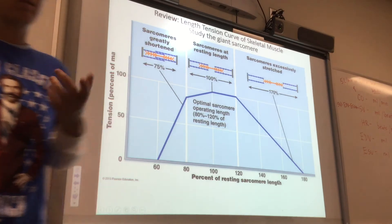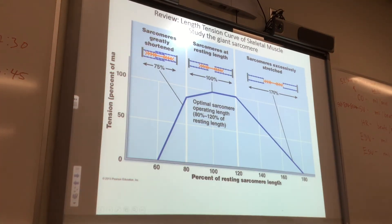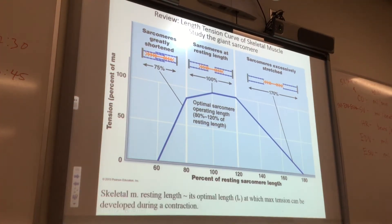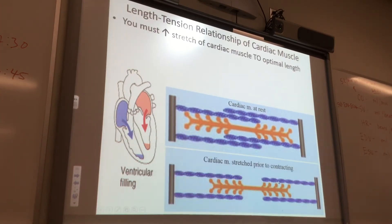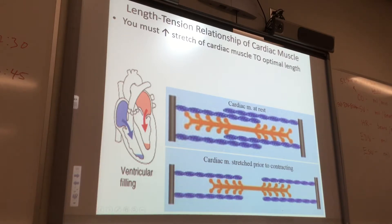When they contract, they can eject that blood like they're supposed to. So here's cardiac muscle at rest, and here's cardiac muscle stretched due to filling of the ventricles. Unlike skeletal muscle, which is already at optimal length at rest, you have to stretch your cardiac muscle to an optimal length.